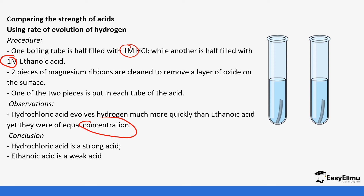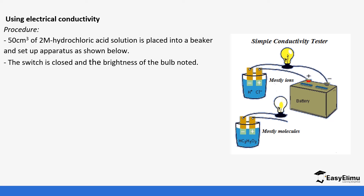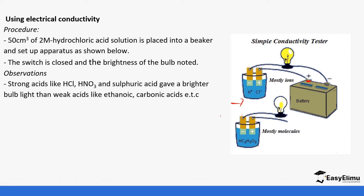Being of the same concentration does not mean they are the same strength. Hydrochloric acid dissociates fully while ethanoic acid does not, so hydrochloric acid is a strong acid and ethanoic acid is a weak acid. We also use electrical conductivity to distinguish them. When hydrochloric acid and ethanoic acid are placed in separate beakers in the conductivity setup, strong acids like hydrochloric acid give a brighter light, while weaker acids like ethanoic acid give a dimmer light.